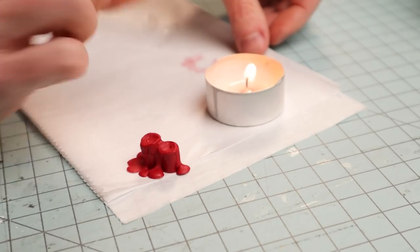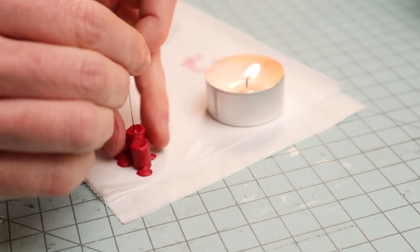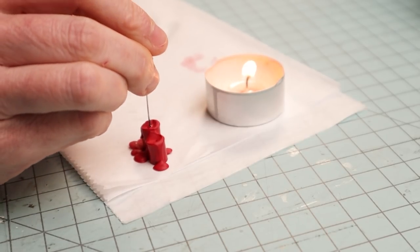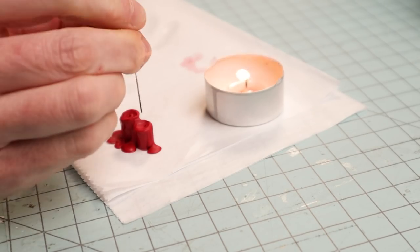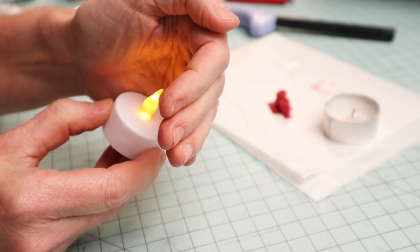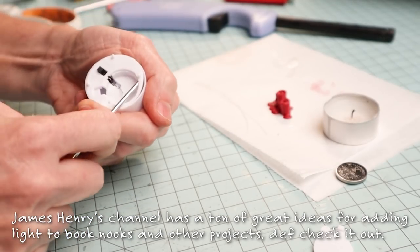So I tried an experiment by combining another tutorial. After I had watched James Henry make a twinkling sky, I heated up this pin to make a hole through the center of each candle. I dismantled a flickering tea light from the dollar store to get the LED.